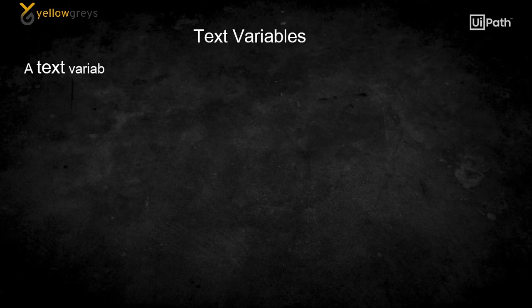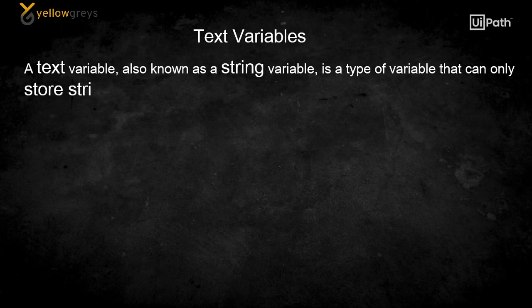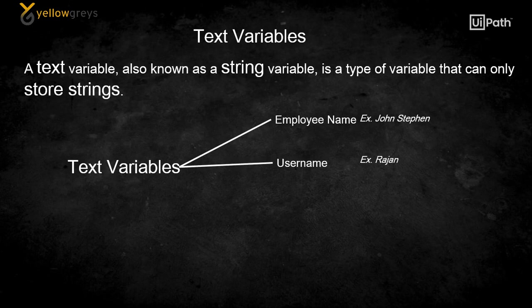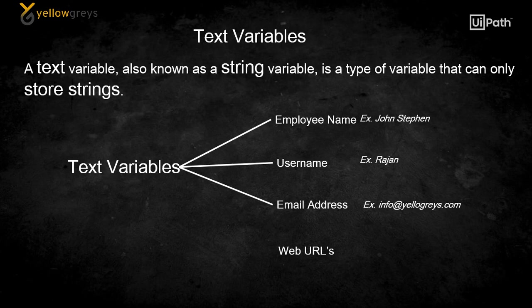Text variables. A text variable, also known as a string variable, is a type of variable that can only store strings. Any information such as employee name, user name, email address, web URLs, or any other string can be stored in these variables.